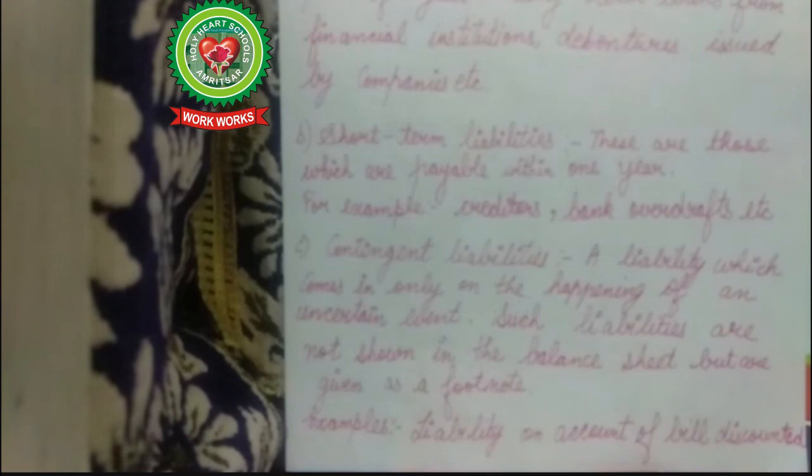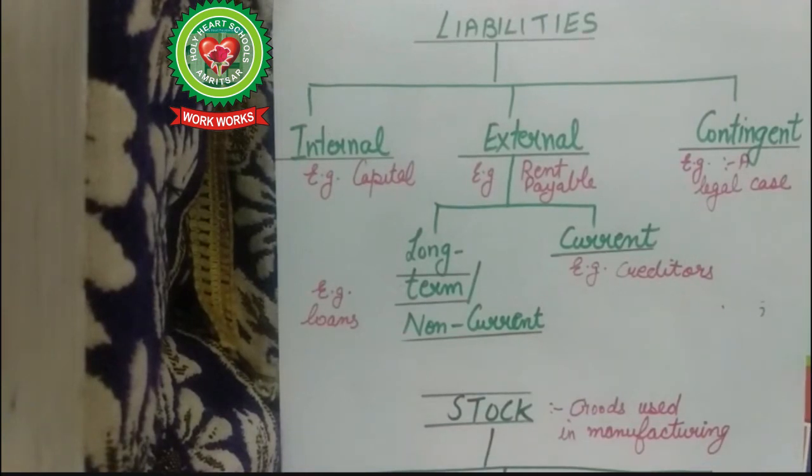Next is contingent liability. Contingent means something that may or may not happen. A contingent liability arises only on the happening of an uncertain event. Such liabilities are not shown in the balance sheet but given as a footnote. For example, after one or two years a legal dispute arises and you have to pay a lawyer's fees amounting to 50,000. That 50,000 is your contingent liability because you were not expecting the liability to arise — it arose because of a specific event, that is the legal dispute.